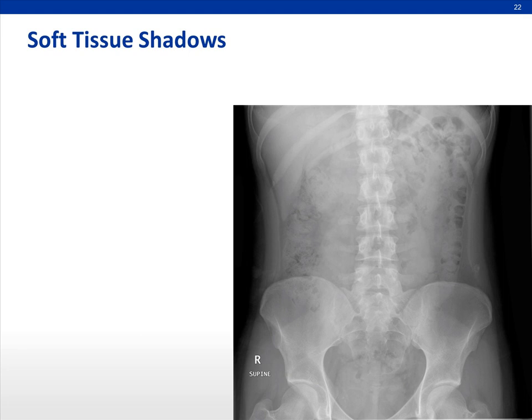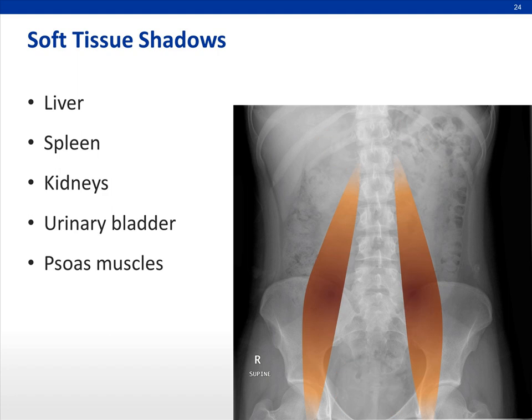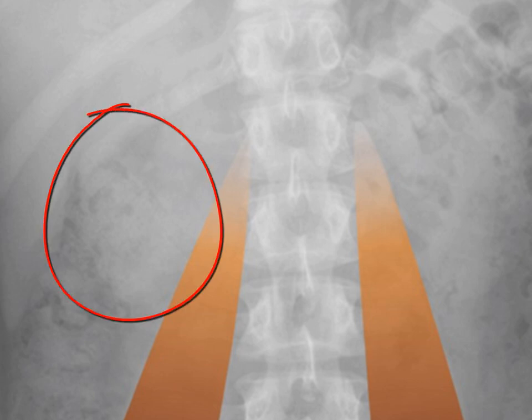After that, you want to look at the soft tissue. In the right upper quadrant we have the liver, left upper quadrant the spleen, and we don't want to forget the kidneys. The pelvis will always have the bladder, and the psoas muscles are beside the vertebral bodies. One useful tip to identify the kidney shadows is to look for the psoas shadow, and then look laterally to find the kidney shadow.